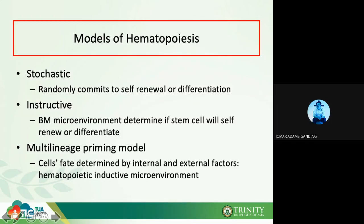For example, erythropoietin influences a differentiated cell into becoming a red blood cell. Similarly, specific colony stimulating factors influence differentiation toward white blood cells or megakaryocytes. Later on we will be talking about the colony forming unit, colony stimulating factors like G, M, GM, and others as we go along.